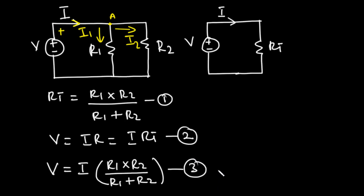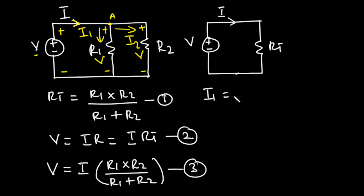Since R1 and R2 are connected in parallel, the same source voltage V is applied across both of them. So the voltage across R1 is V and the voltage across R2 is also V. According to Ohm's law, I1 = V / R1 and I2 = V / R2.